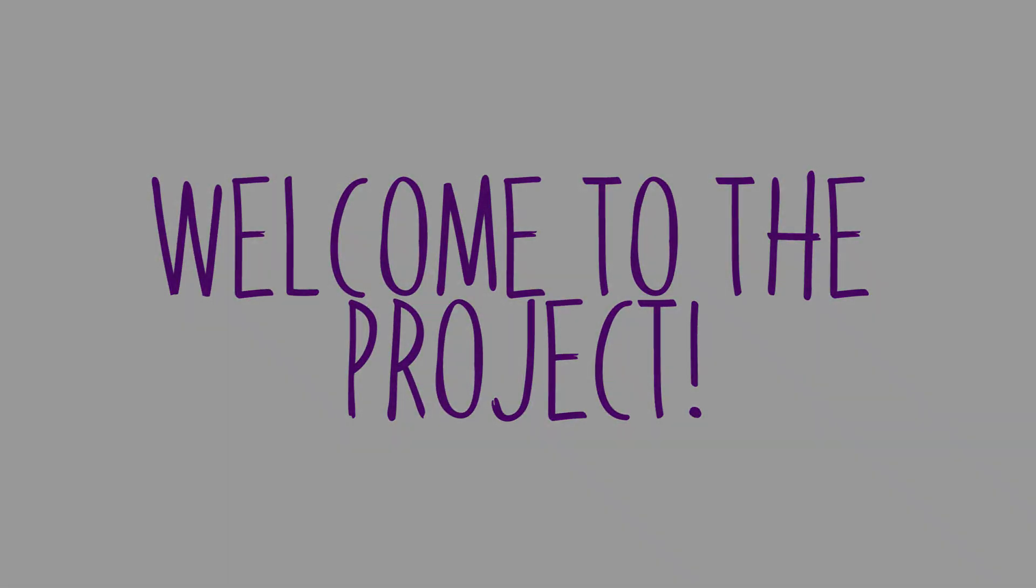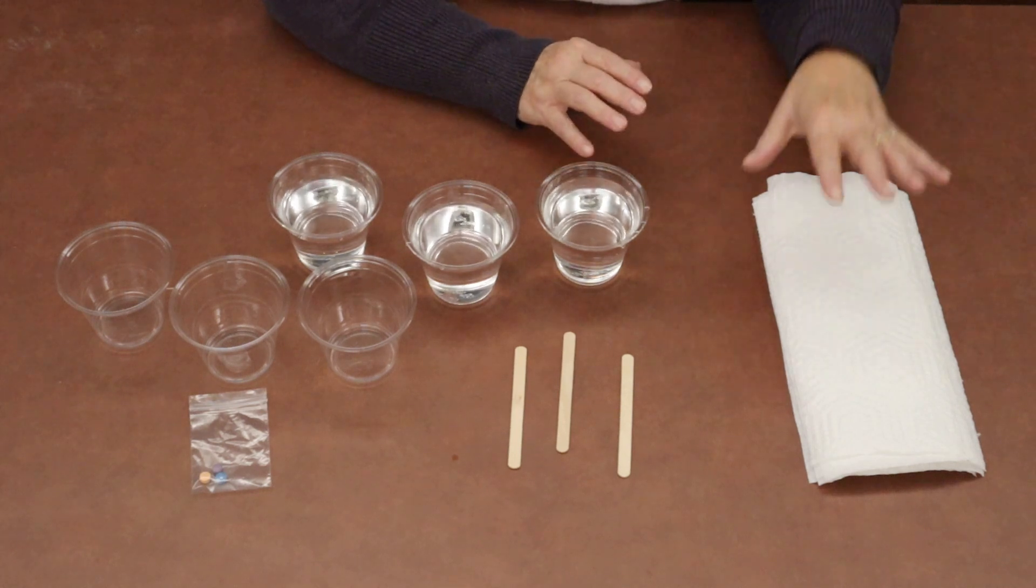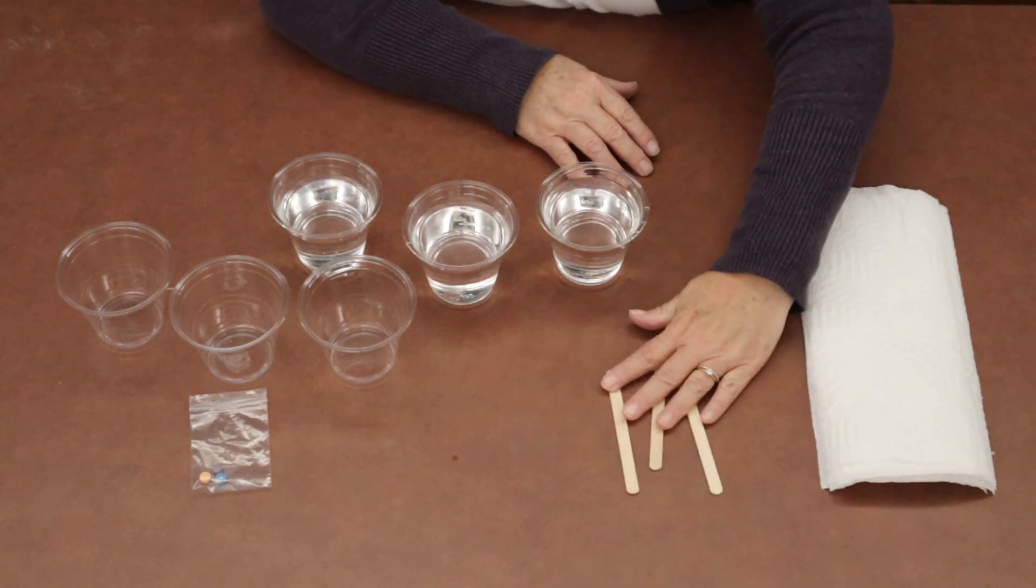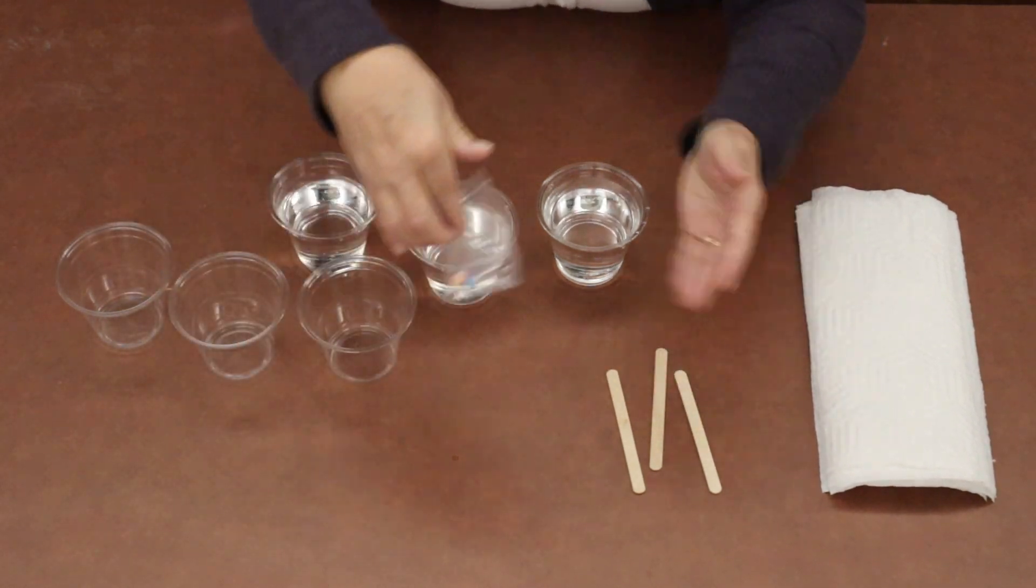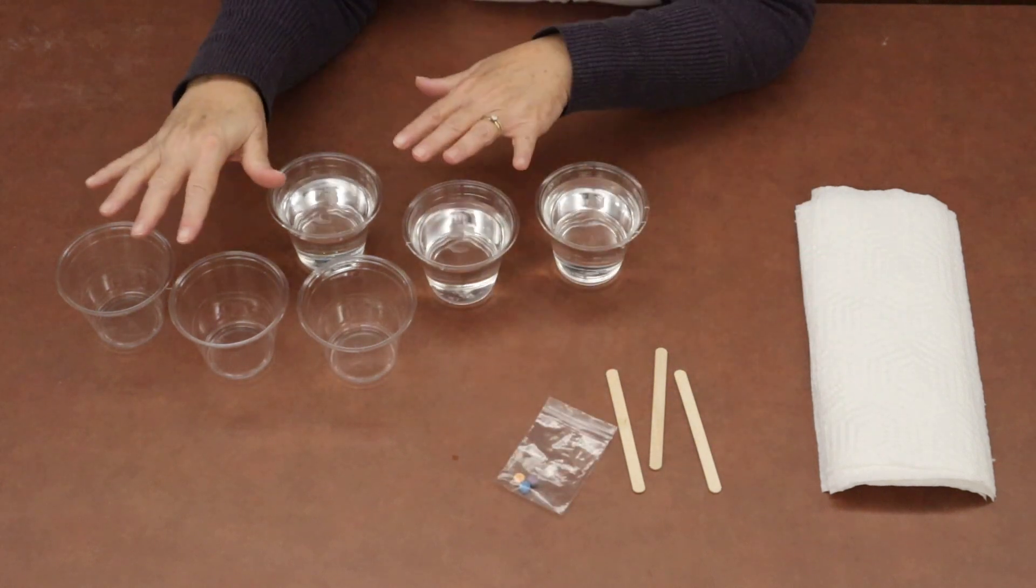So let's get started. In your take and make bag you're going to find six pieces of paper towel, three craft sticks, three little color tablets in a plastic bag, and six cups.